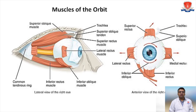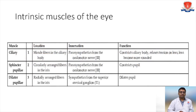Intrinsic muscles of the eye include the ciliary muscle, located in the ciliary body, with parasympathetic innervation from the oculomotor nerve — it constricts the ciliary body, relaxes tension on the lens so the lens becomes more round. The sphincter pupillae consists of circularly arranged fibers in the iris with parasympathetic innervation from the oculomotor nerve — it constricts the pupil. The dilator pupillae consists of radially arranged fibers in the iris and dilates the pupil.